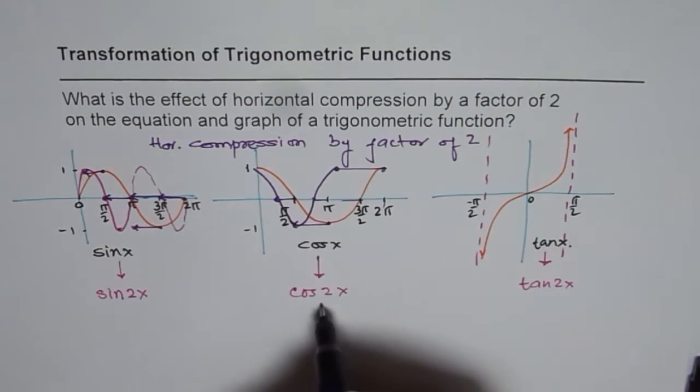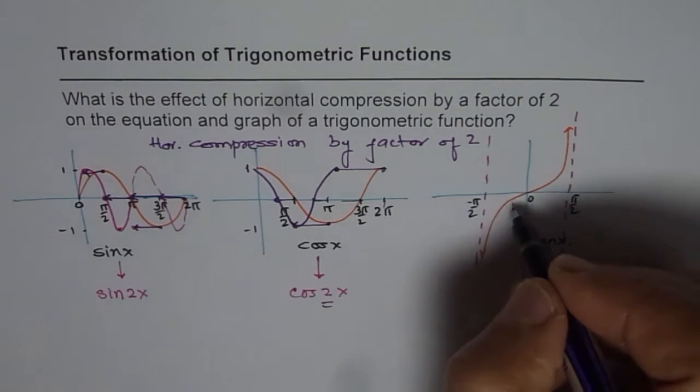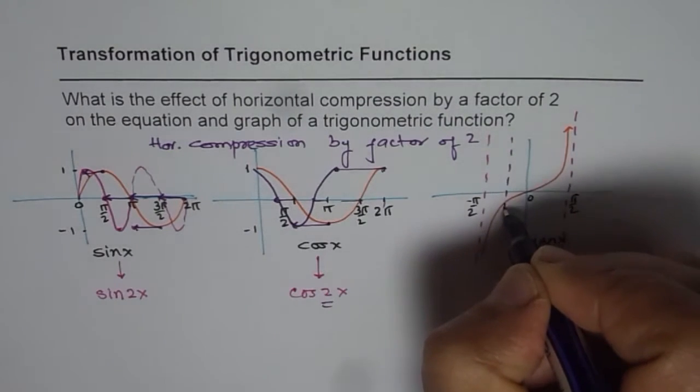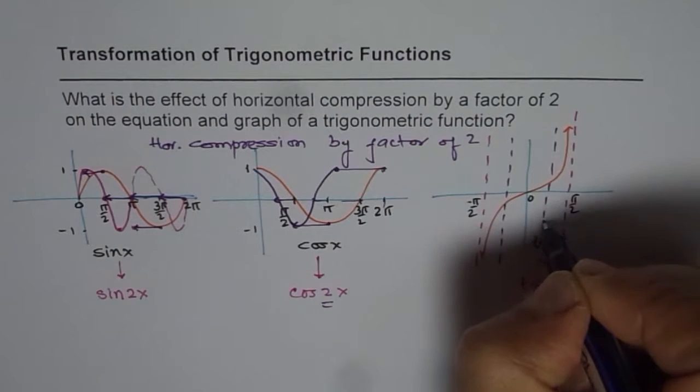So that becomes cos of 2x, horizontally compressed by a factor of 2. Similarly, in this case, we will have vertical asymptotes now, not at pi by 2, but at pi by 4.